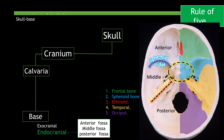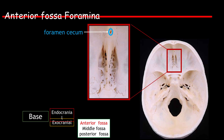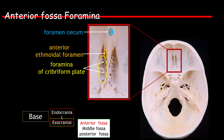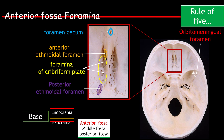You can pause the video here if you'd like and review what we've talked about so far. Moving on, let's discuss some of the anterior fossa foramina. Highlighted within the blue circle is the foramen cecum, within the yellow circle is the foramina of the cribriform plate, in orange is the anterior ethmoidal foramen, in purple is the posterior ethmoidal foramen, and in red is the orbital meningeal foramen.